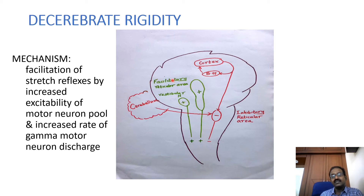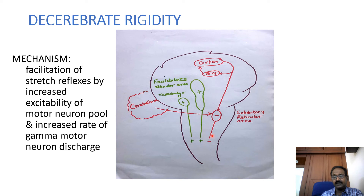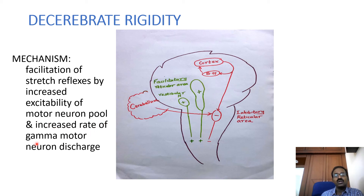In the mid-collicular lesion, the cortex and basal ganglia control over the medulla is lost. The cortex and basal ganglia control over the inhibitory reticular area is absent. The inhibitory reticular area is important for controlling muscle tone. So the facilitatory reticular area activity is increased, which increases the tone of the extensor muscles — the anti-gravity muscles — through the increased motor neuron pool and increased rate of gamma motor neuron discharge. This produces extensor rigidity.